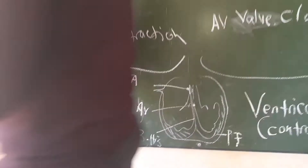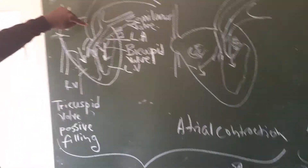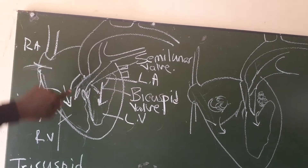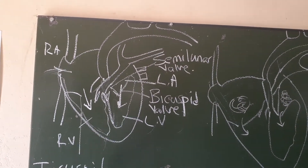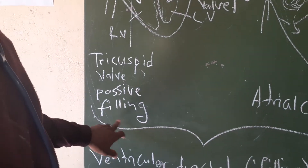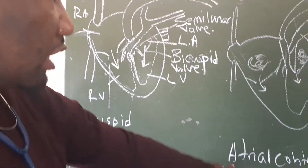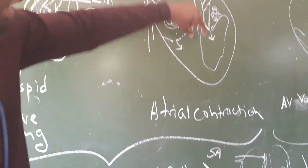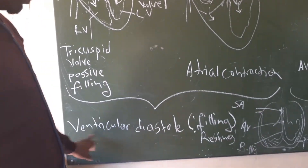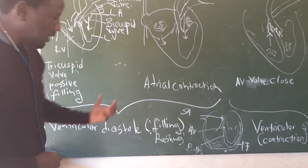On the chalkboard, let me show what I'm talking about. In the first stage, the electric current causes the atria to contract. When they contract, the blood flows into the ventricles. When that is happening, we call it passive filling of the ventricles — meaning they are not doing anything. At the same time, you have atrial contraction pushing the blood in. This whole first stage is called ventricular diastole, meaning the ventricle is resting and filling.